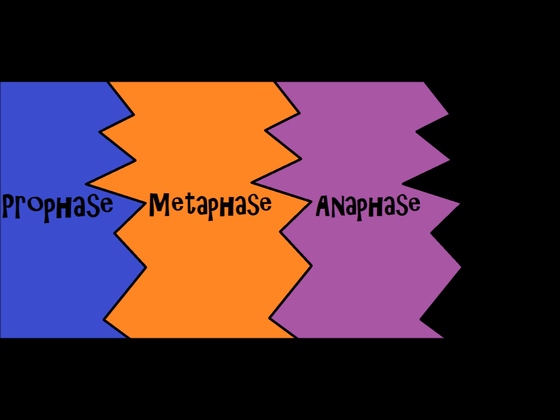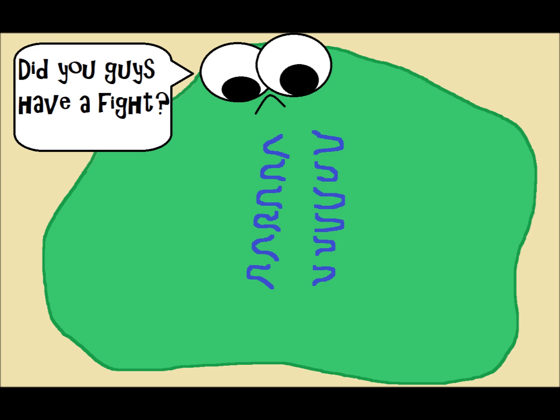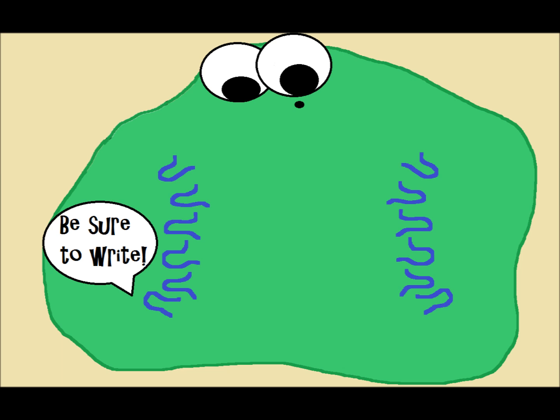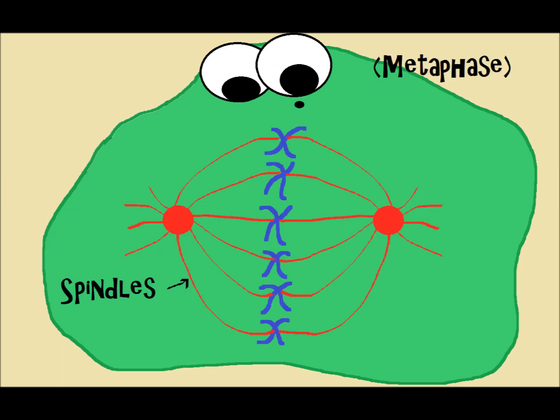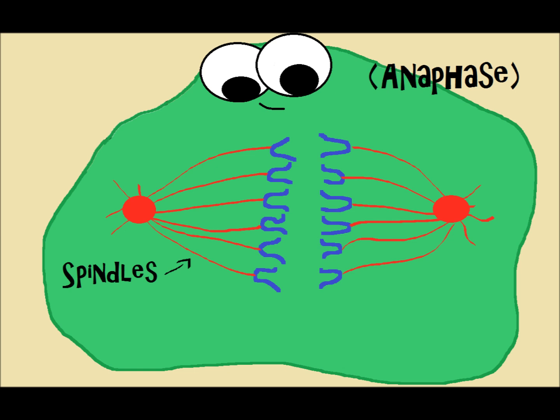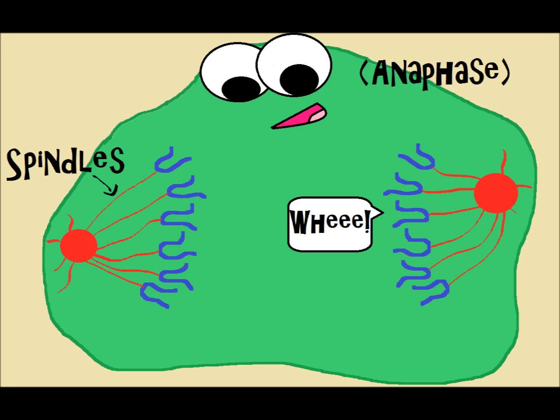Next, the A is for anaphase. In anaphase, I like to think of the A as standing for 'away' — the chromosomes move away, moving to the opposite sides of the cell, toward the poles. Now, one thing to point out: these chromosomes are not moving by themselves. They actually have something called spindles — fibers that help move the chromosomes to the opposite ends.